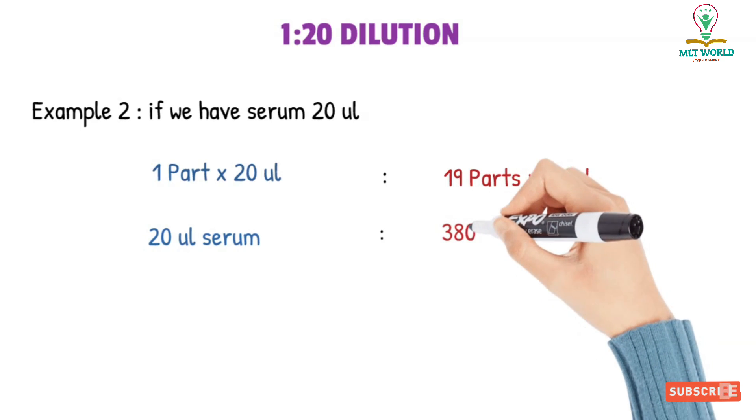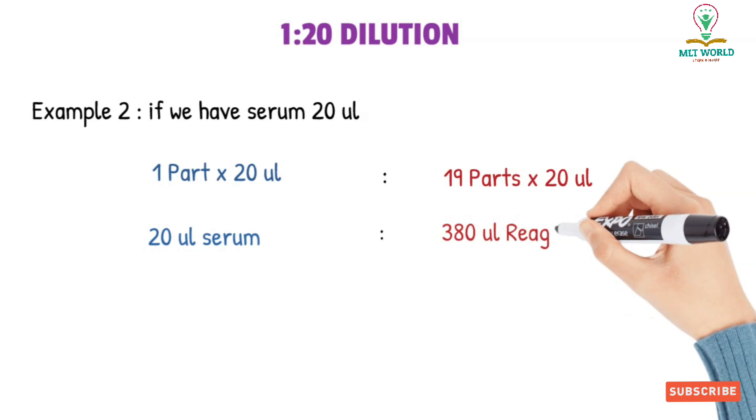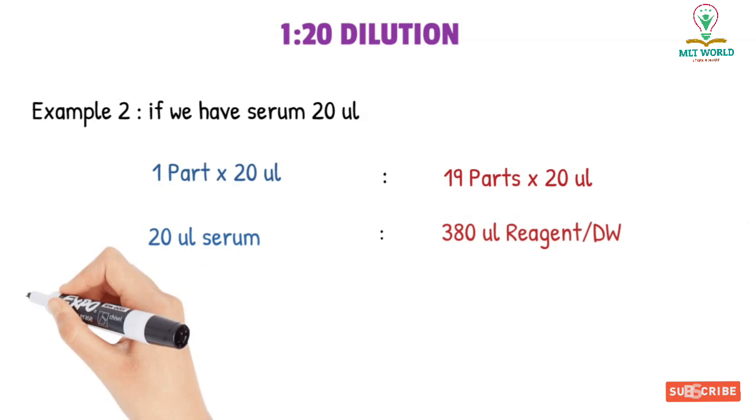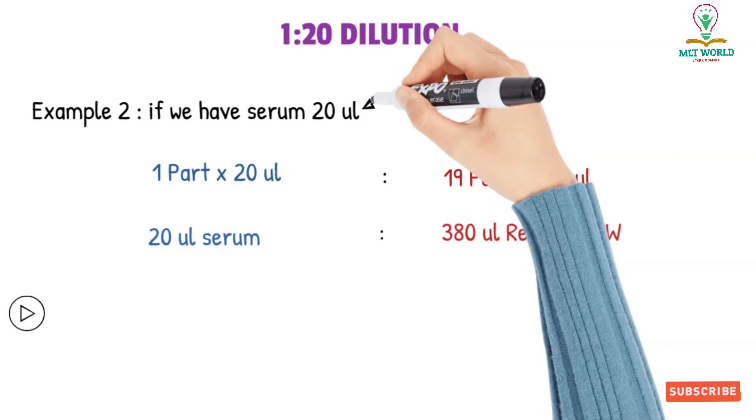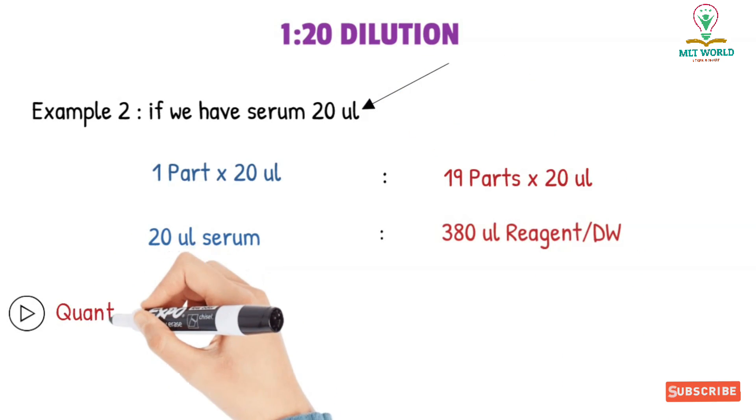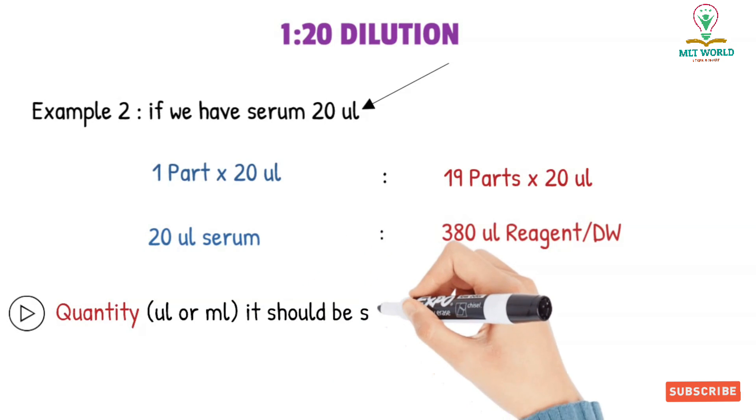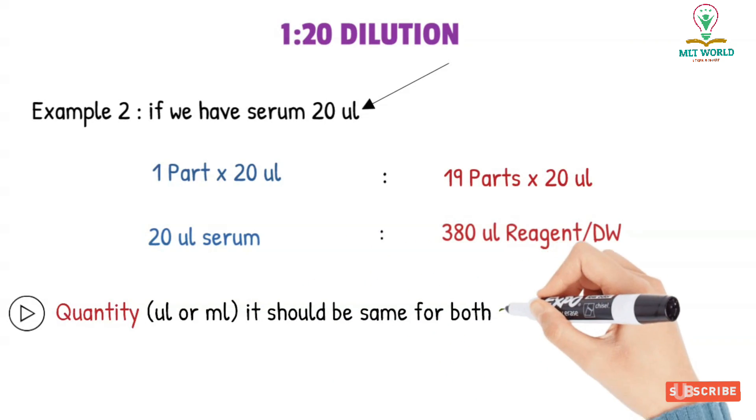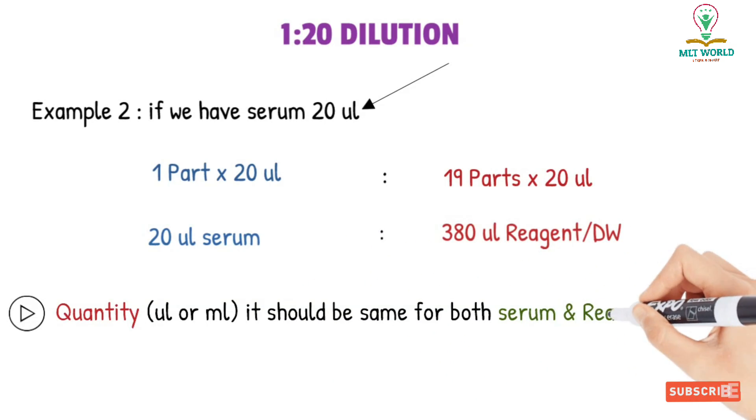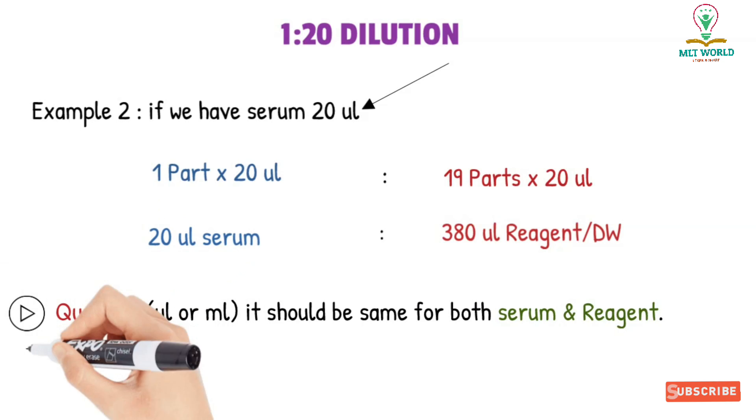So now you understand. Now here two points are very important in this dilution method. First of all, the unit—you have to keep the same unit for sample also and for reagent also, either it is microliter or ml, so that your pipetting should be correct. So 20 microliter if we took serum, then 20 microliter will be multiplied with the reagent part also.